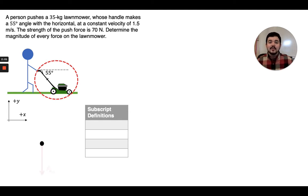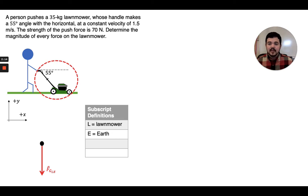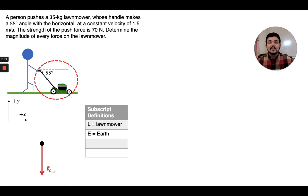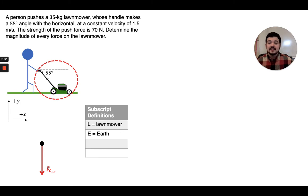Our first force will be the gravitational force downward, and that gravitational force is exerted on the lawnmower by the earth. The L is our subscript for lawnmower and the E is our subscript for earth. Remember that notation is always feeler-dealer: the first subscript is the type of force, the next subscript is the object feeling the force — the lawnmower — and the last subscript is the object dealing the force, which is the earth.